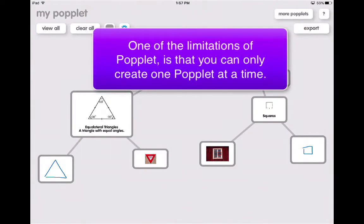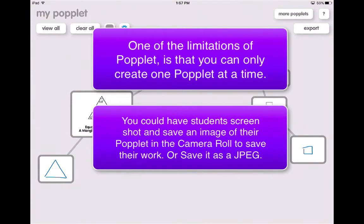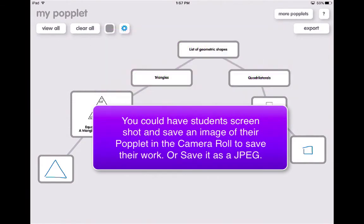One of the limits of Popplet is that you're only allowed to make one of them at a time. If you had the paid version, you could then make multiple poplets. But what I would do is I would have my students create a Popplet, either screenshot it by hitting the home screen and the power button at the same time, or saving it as a JPEG, and then creating a completely new one, just editing the same one that they previously created.